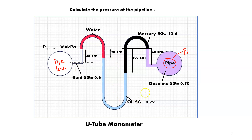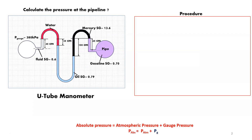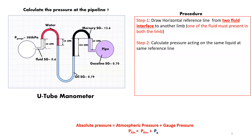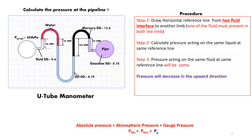This type of manometer is also called a multi-fluid manometer, a multi-UTO manometer, or a double UTO manometer. Now we need to calculate the pressure at that pipeline. All other data are given, and we'll understand the calculation much better as we go through the procedure.